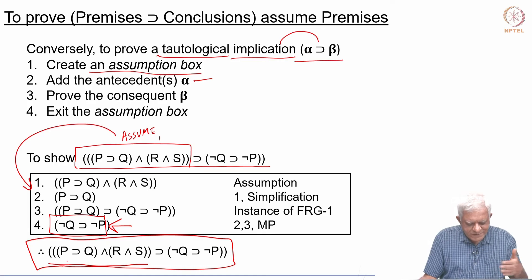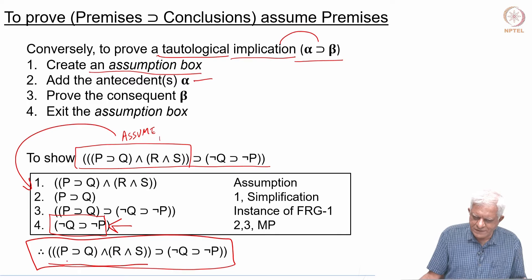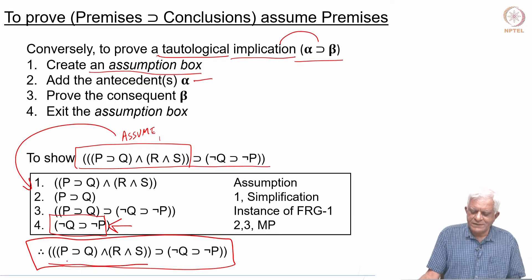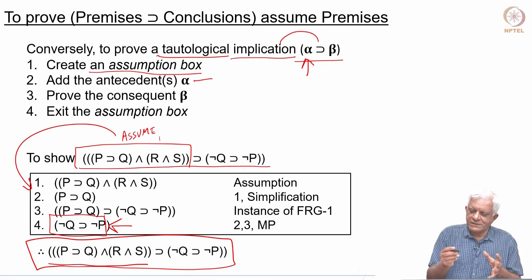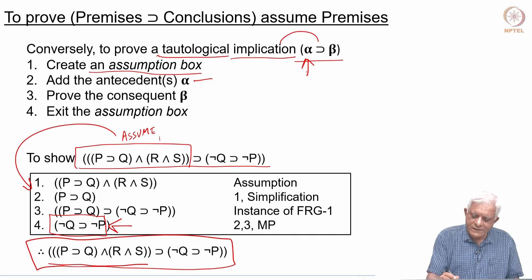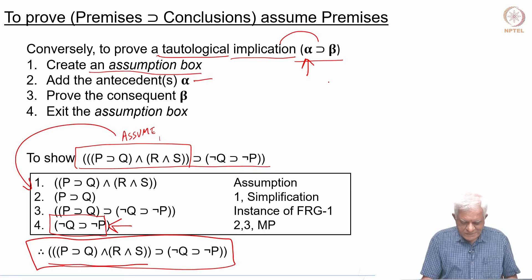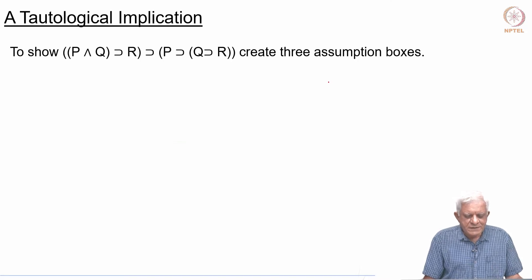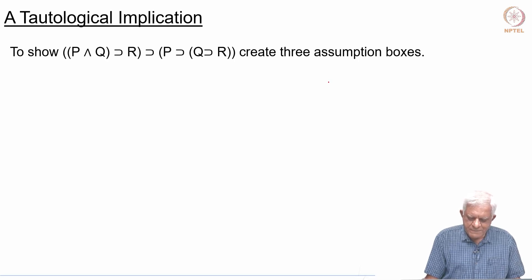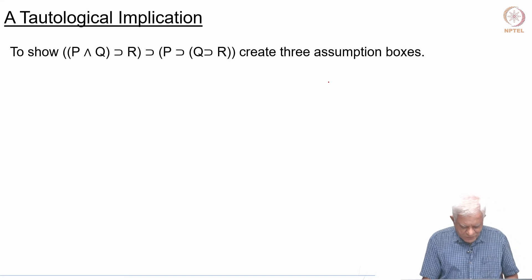You can see it is quite a simple way: if you want to show that something is a tautological implication, you start by assuming the antecedent — in this case alpha — and then using whatever axioms you have, showing that you can derive beta. The deduction theorem says that if you can assume alpha and derive beta, it is equivalent to showing that alpha implies beta is a tautology. Now let us look at another example: we want to show that the formula (p ∧ q → r) implies (p → q → r), and we will need to create three nested assumption boxes.